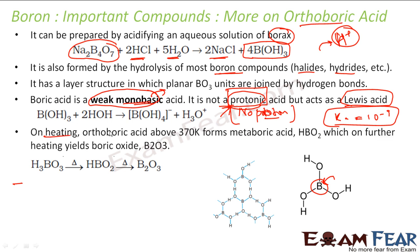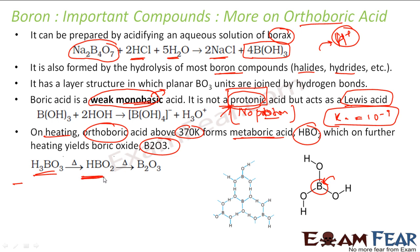On heating boric acid above 370 K, it forms metaboric acid, HBO₂. On further heating, it gives boric oxide, B₂O₃. So: heat boric acid → metaboric acid → boric oxide.